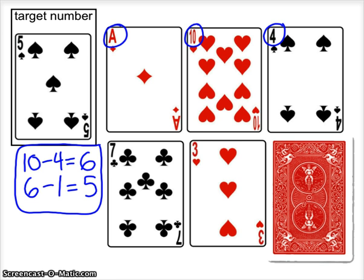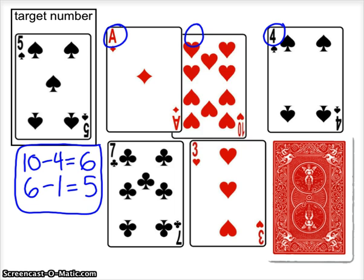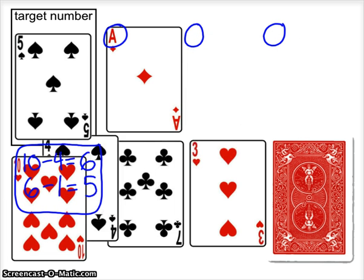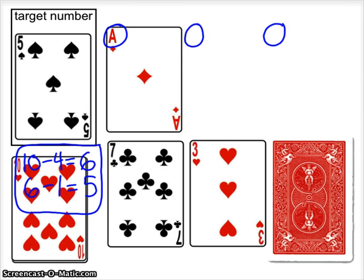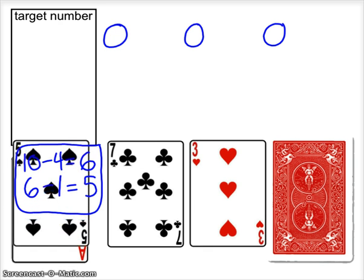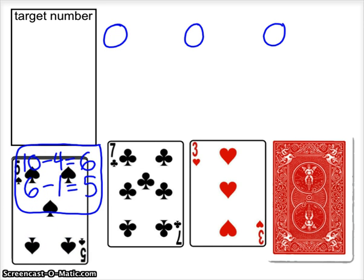First, you should write down everything you're doing and you can practice your facts that way. You're going to take the 10. I get to keep the 10 card. 10 minus 4 equals 6, and 6 minus 1 equals 5. Make a pile for the first player, and those are all the cards that belong to the first player.